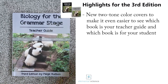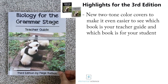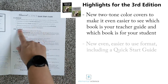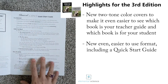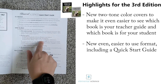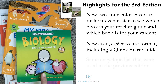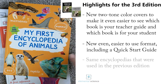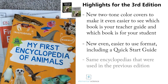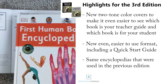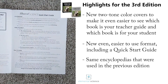Let's dig into the teacher's guide first. We'll start off with a Quick Start Guide that will tell you what you're doing in a nutshell, what you need as far as the student materials, and the three spines. The three spines are going to be the same as in the previous editions: the Basher Biology, the My First Encyclopedia of Animals from Kingfisher, and the DK First Human Body Encyclopedia.